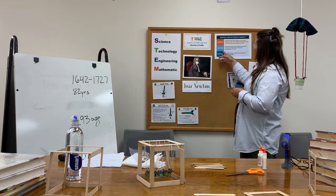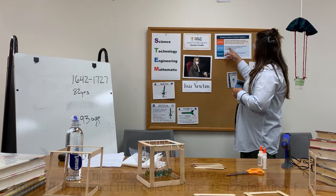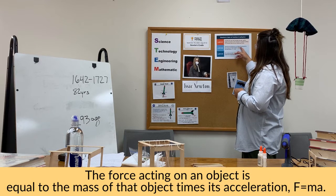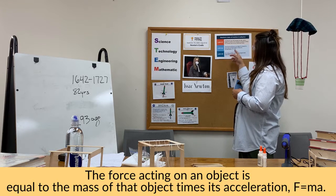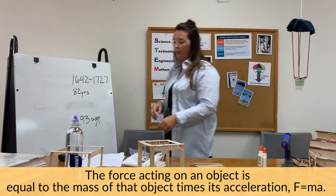Law of motion two. The force acting on an object is equal to the mass of the object times its acceleration. So it's a formula.